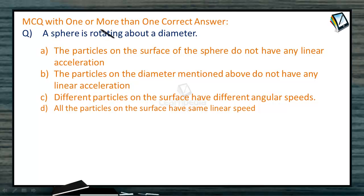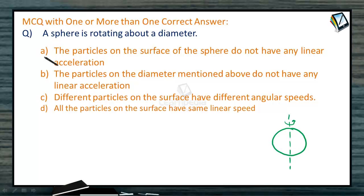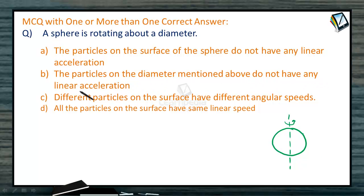This is an MCQ with one or more than one correct answer. A sphere is rotating about a diameter. Now, the particles on the surface of the sphere do not have any linear acceleration, and the particles on the mentioned diameter also do not have any linear acceleration.